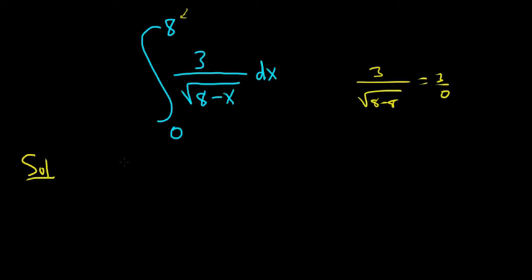So solution. What you do in these problems is you replace the 8 with a letter, so a symbol. So like B, okay? And then I'll rewrite this. This is 3 over the square root of 8 minus x dx.